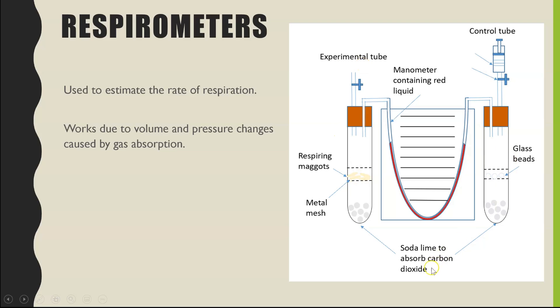So let's have a look at the equipment. You would typically have two test tubes. One is there as a control and the other is our experimental tube, and they are attached together by what we call a manometer. And this is this really thin capillary tube which has colored liquid inside of it.